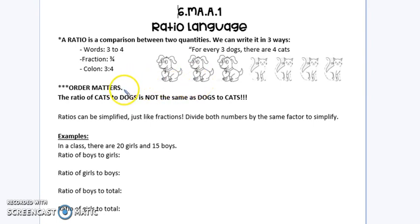With ratios, the order matters. So I couldn't say that the ratio of cats to dogs is 3 to 4. That's not true. If I wanted to use the ratio of cats to dogs, I would need to say 4 cats for every 3 dogs.